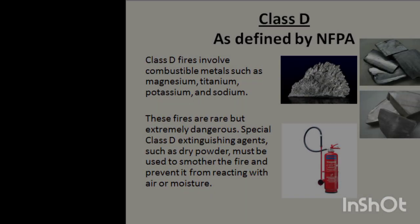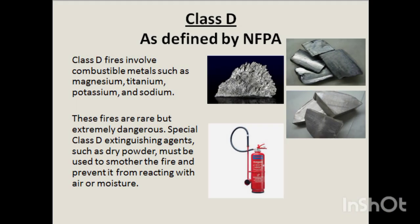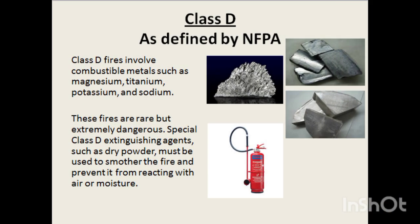Class D fires involve combustible metals such as magnesium, titanium, potassium, and sodium. These fires are rare but extremely dangerous. Special Class D extinguishing agents, such as dry powder, must be used to smother the fire and prevent it from reacting with air or moisture.